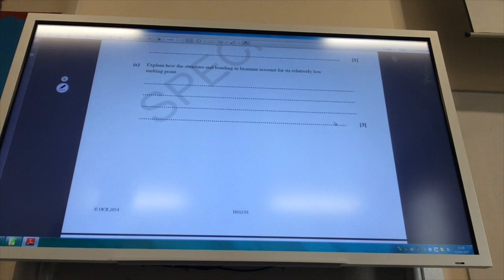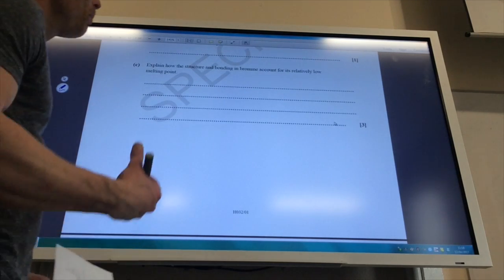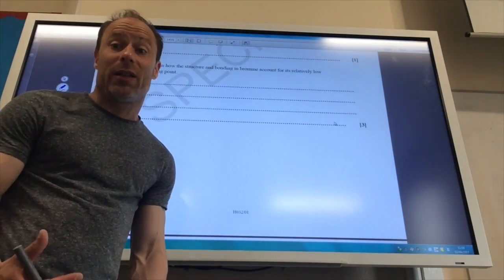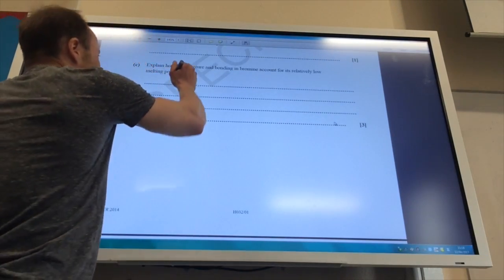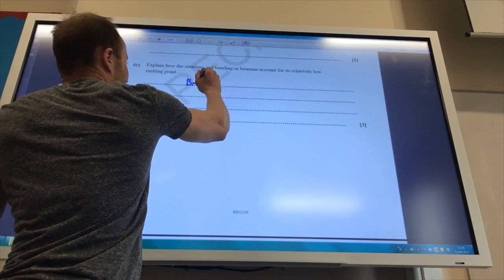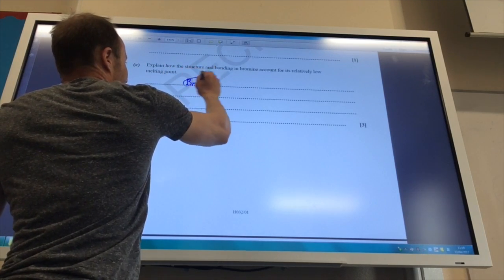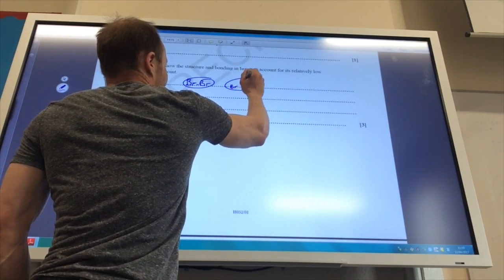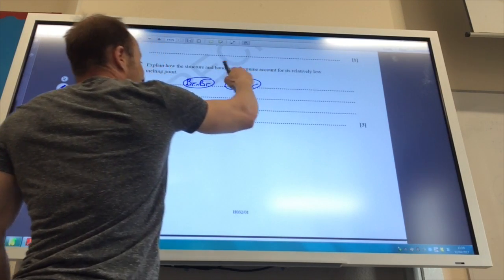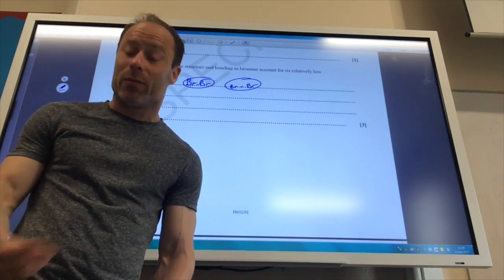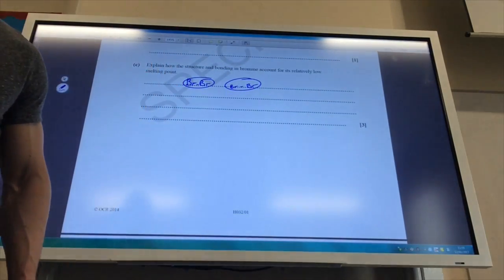Explain how the structure and bonding in bromine account for its relatively low melting point. Remember between bromine molecules there are weak London forces. So between two Br2 molecules, I've got bromine like so and then another bromine like so. Between these two are weak London forces which are very easily broken which results in a very low melting point.